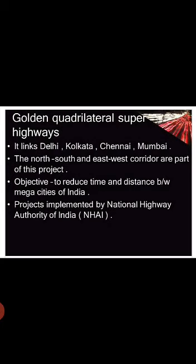The Golden Quadrilateral Superhighways link Delhi, Calcutta, Chennai, and Mumbai. The north-south and east-west corridors are part of this project. The objective is to reduce time and distance between the mega cities of India, and the project is implemented by the National Highways Authority of India.